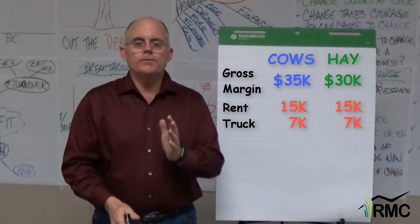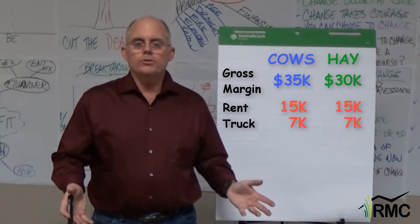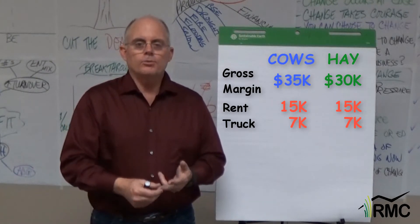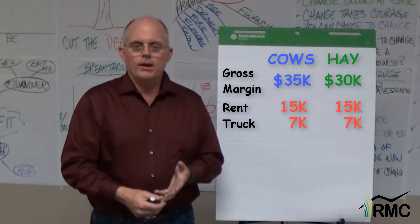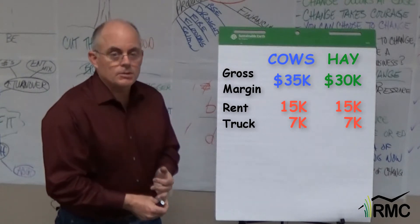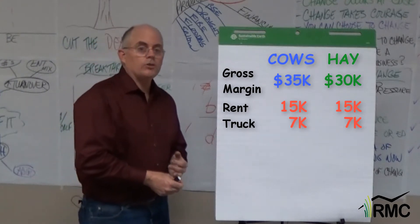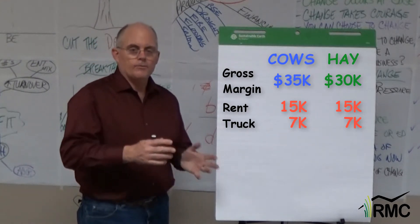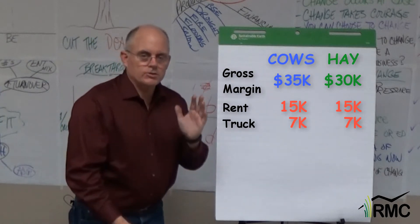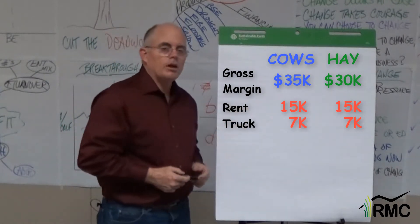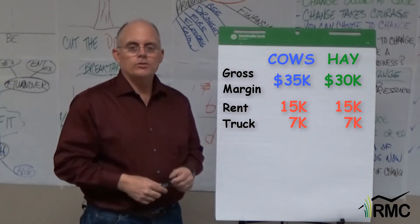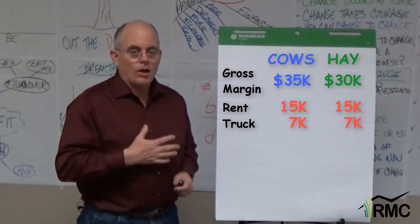I'm going to split the truck cost 50/50, like the university experts tell me to do. Interest, depreciation, repairs, and operating costs — it adds up to about $14,000 a year. So I follow the experts' advice, split the cost in half, allocating $7,000 to the livestock and $7,000 to the hay.